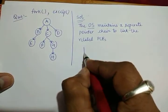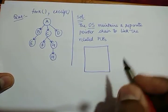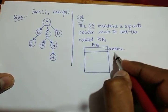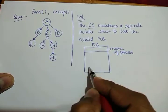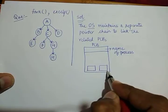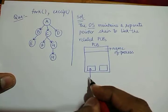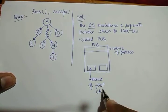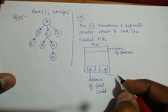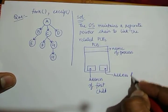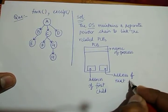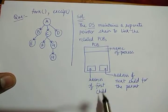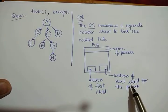In this case, the PCB for each process contains broadly three fields. First is the name of the process, and two additional address fields: the first field denotes the address of the first child of a process, and the second field denotes the address of the next sibling child for the parent.